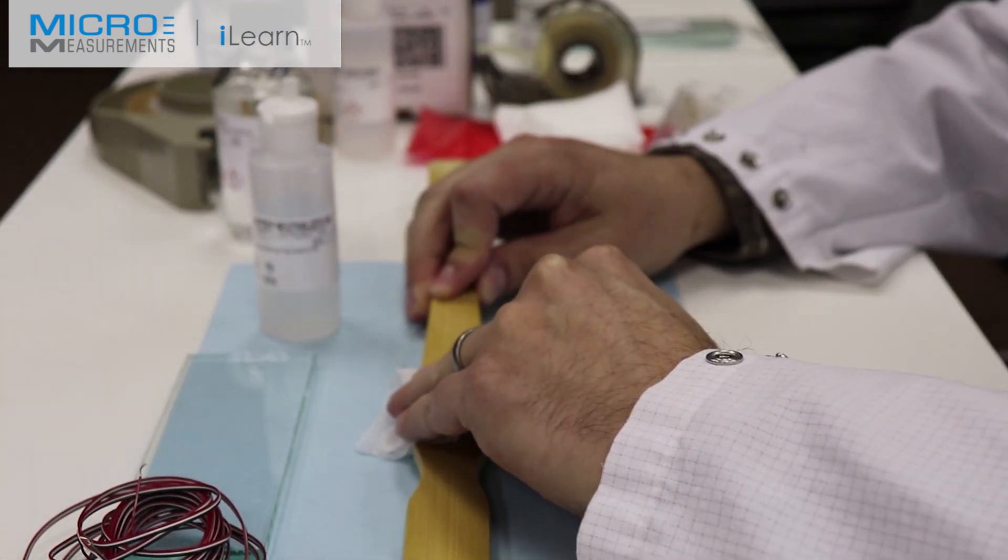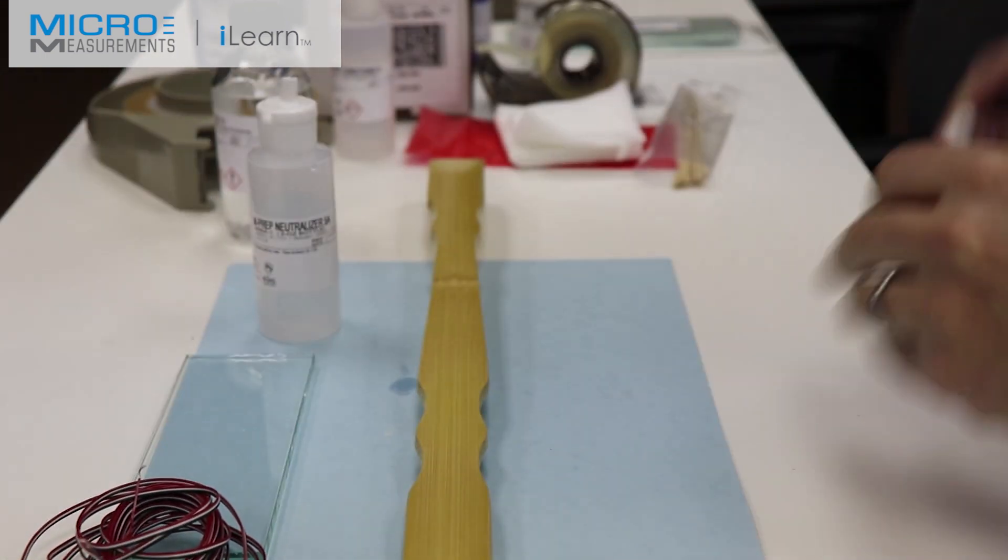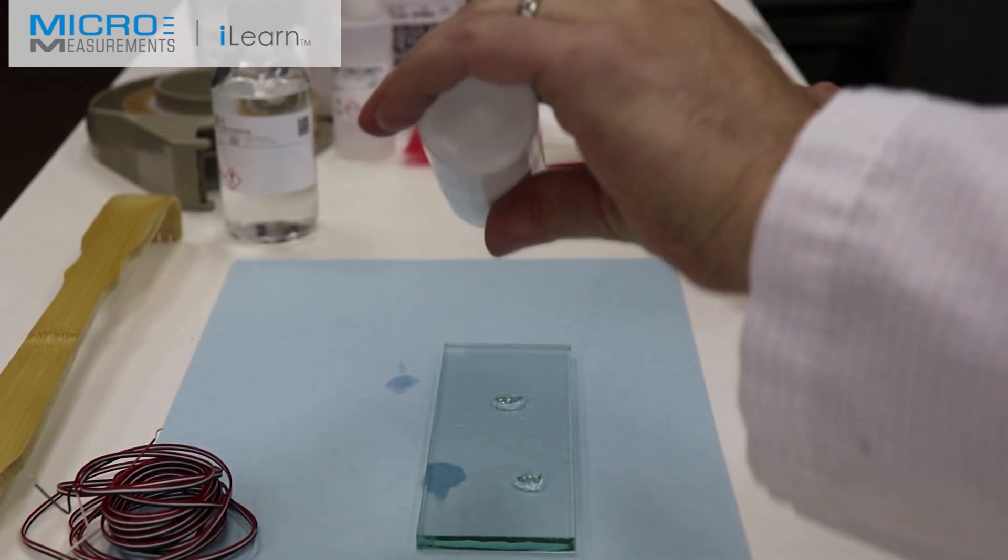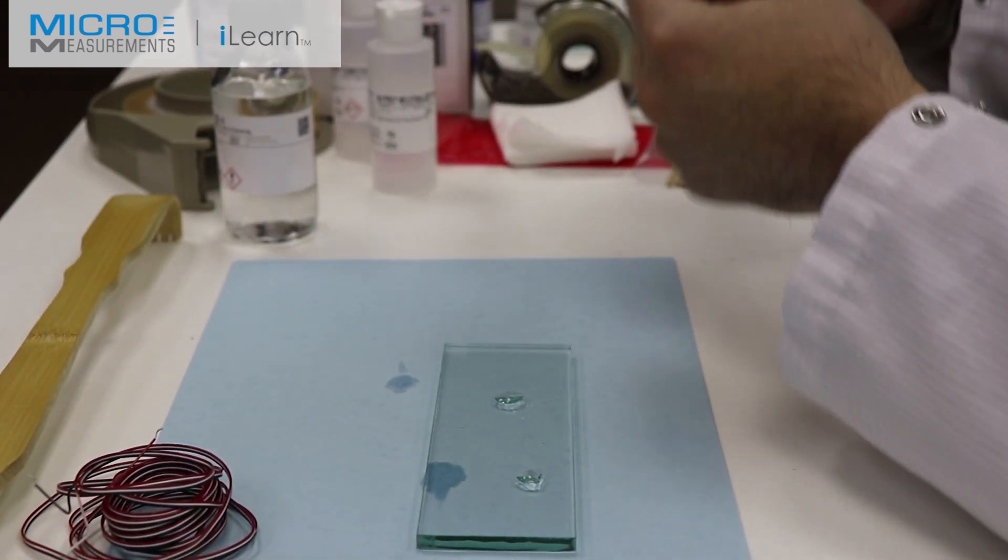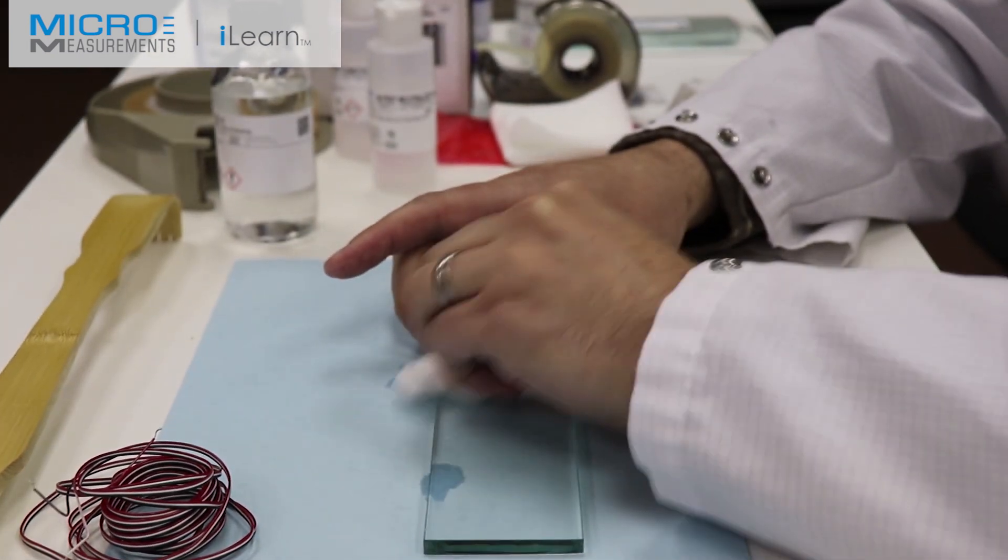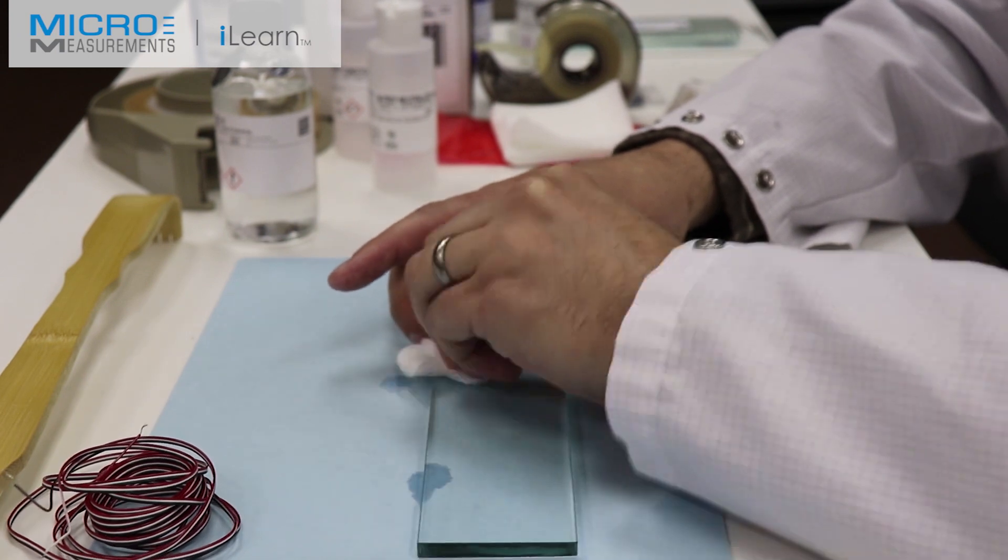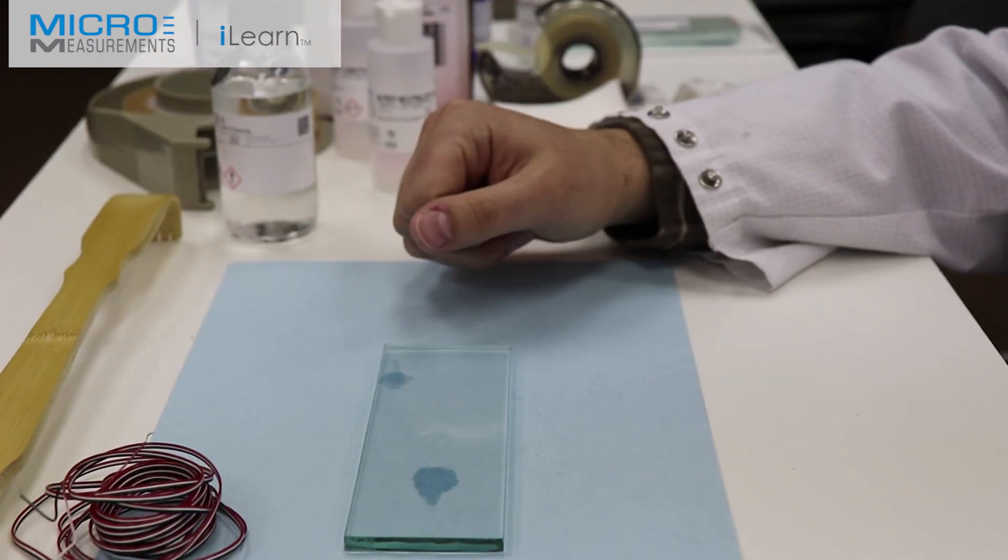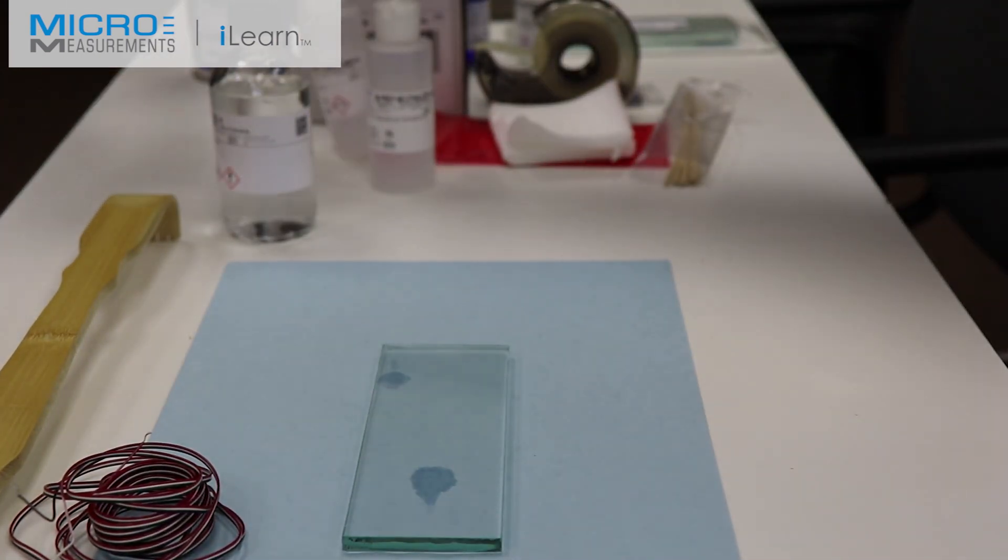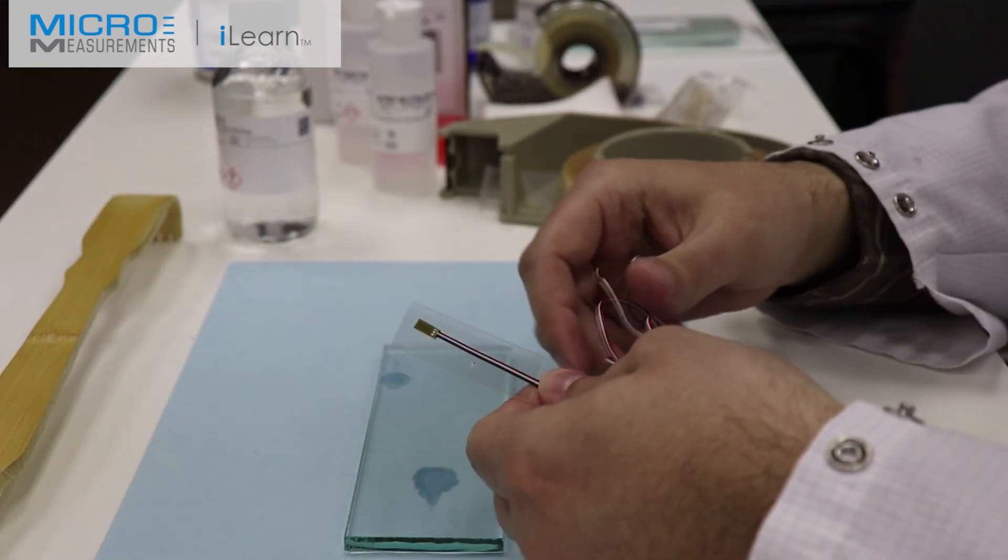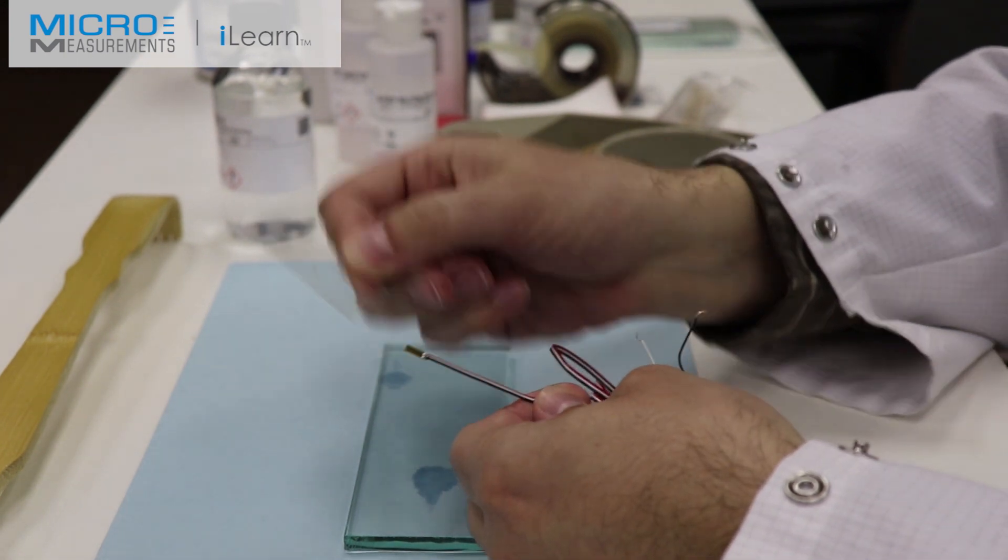We'll set that out of harm's way and locate your glass plate. A couple drops of Neutralizer 5A and a clean dry gauze sponge. Now because of the construction with the lead wires pre-attached, we're going to run the tape transverse to the long axis of the gauge across the beam. It'll make it easier to keep from damaging the gauge. This is a C4A Advanced Sensors Technology Strain Gauge.